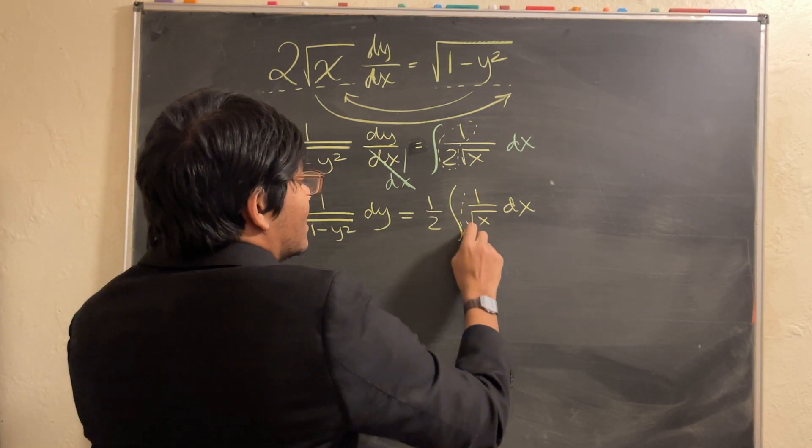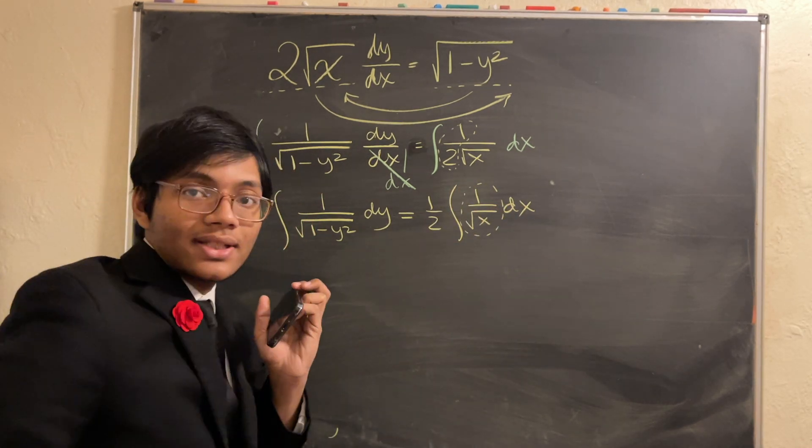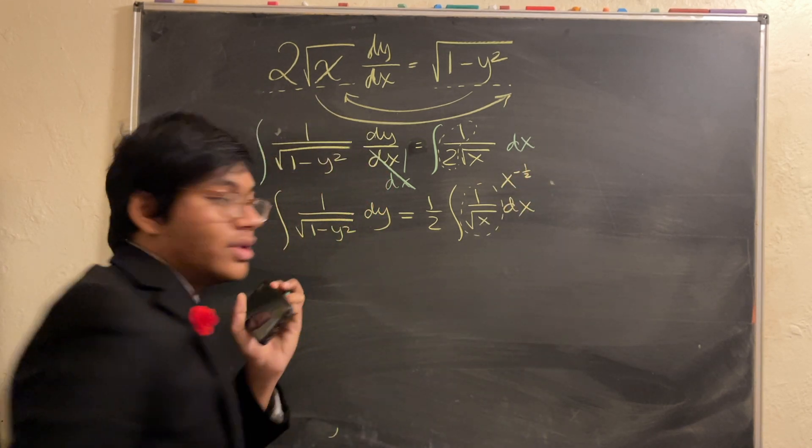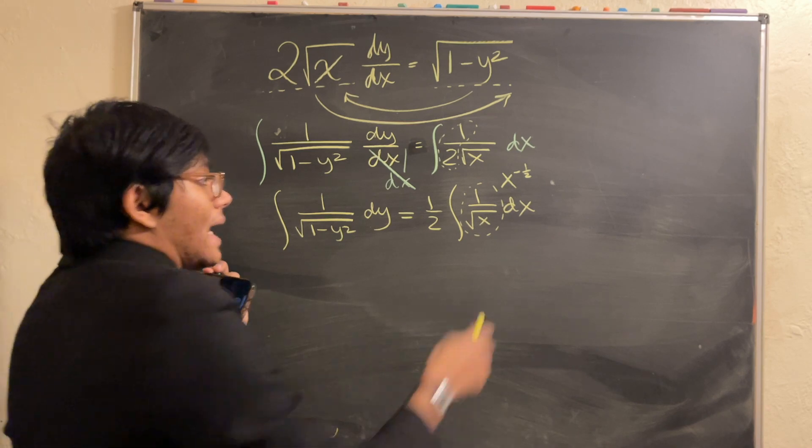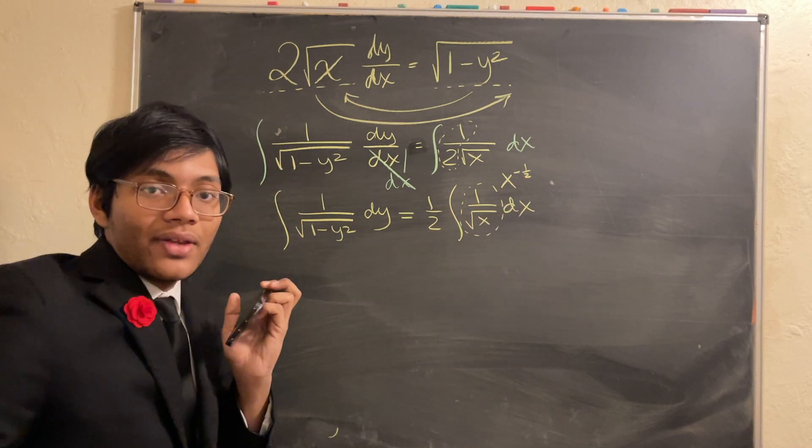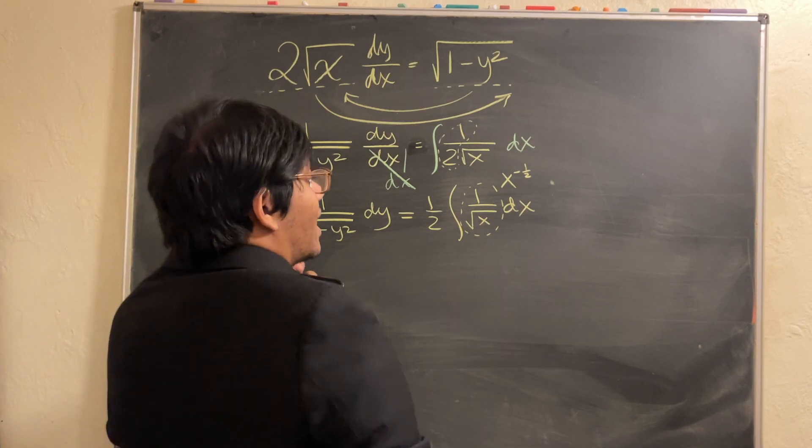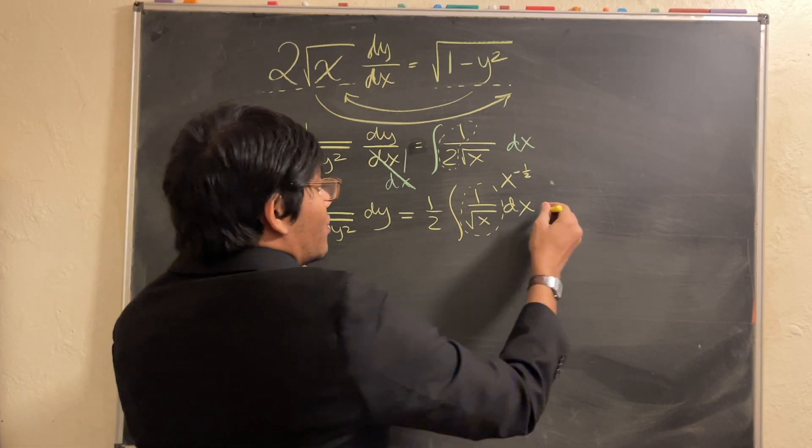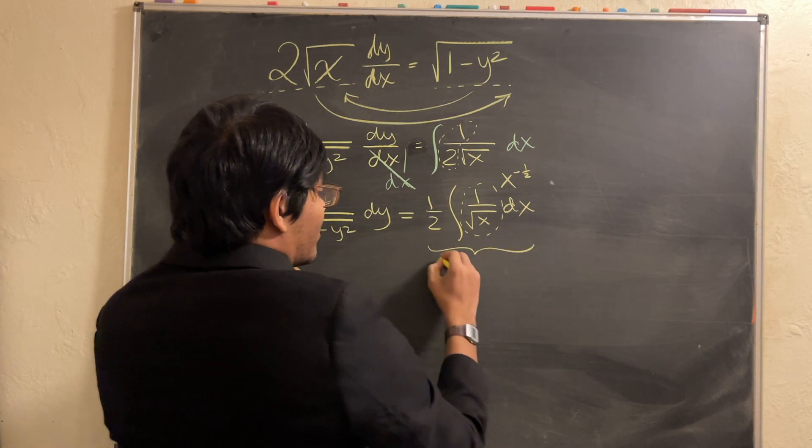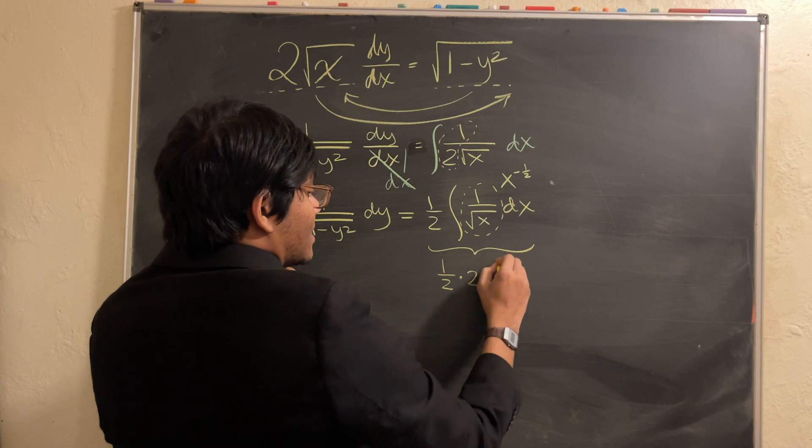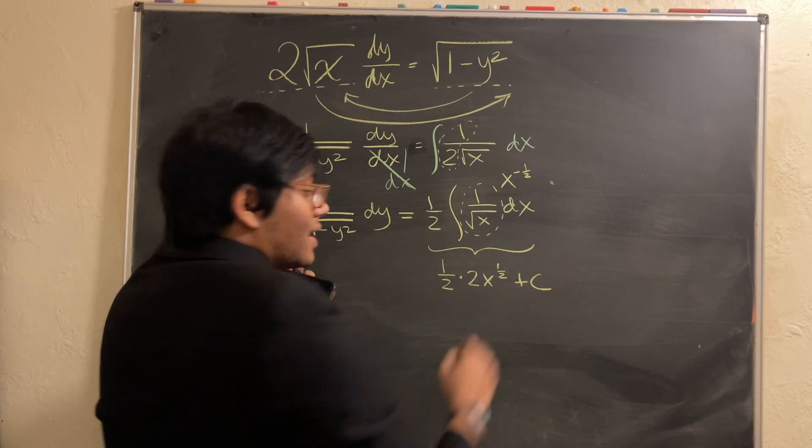On the right-hand side, I have the integral of 1 over the square root of x. That's going to be, if I rewrite this, I can rewrite this as x to the minus half. And remember, when you do the reverse power rule, you're going to add 1 to the exponent and divide by that exponent. So, add 1 to negative half, you get a half. Divide by a half, you get 2. And so, now, we're going to be left with, on the right-hand side, this simplifies out to half times the integral gives us 2x to the half.